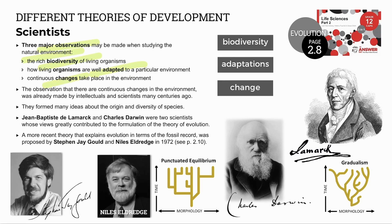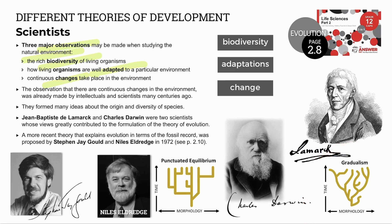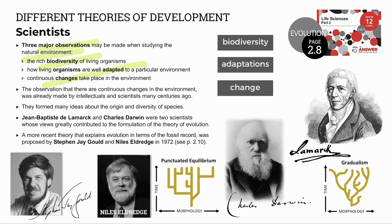We covered Lamarck and his theories in the previous video. We'll focus on Charles Darwin and his theory of natural selection and evolution, including gradualism, in this video. The more recent theory of punctuated equilibrium by Gould and Eldridge will follow in the next video.